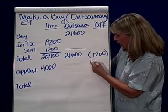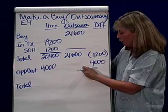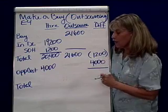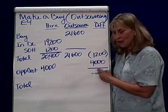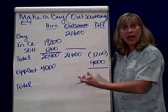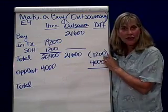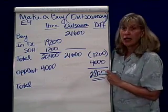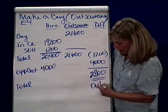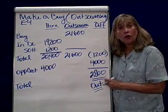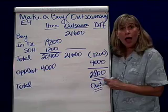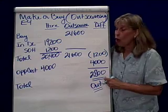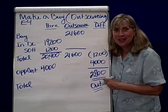So the $4,000 additional benefit from outsourcing versus the incremental cost of outsourcing at $1,200 — am I better off outsourcing? Yes, because I have revenue coming in to cover this difference. The differential is $2,800 in favor of outsourcing. So when you look at a make-or-buy or outsource-versus-in-house decision, remember to consider both incremental costs and your opportunity costs.